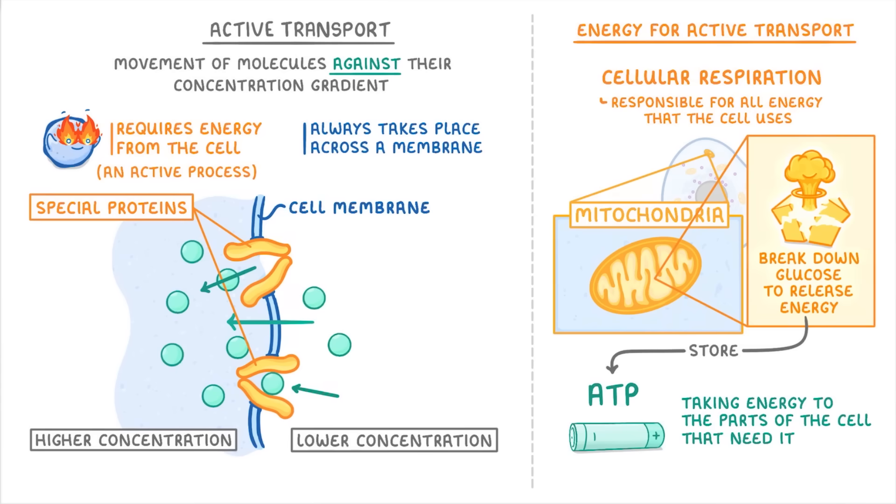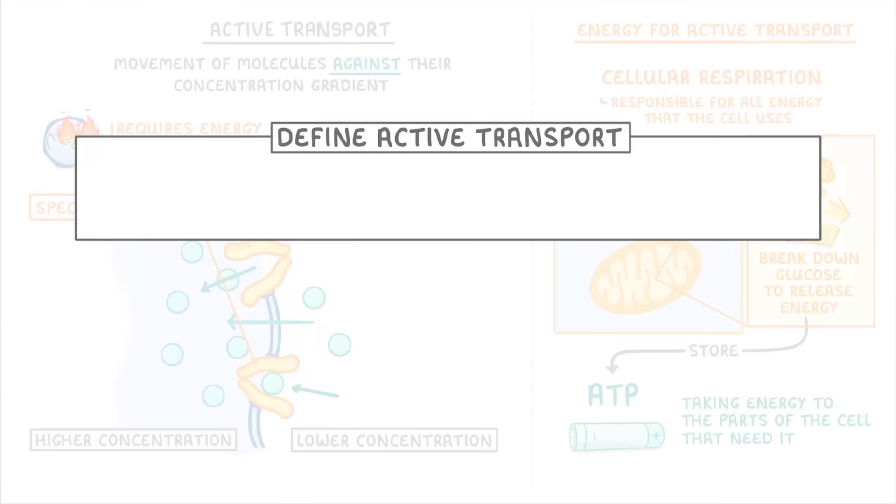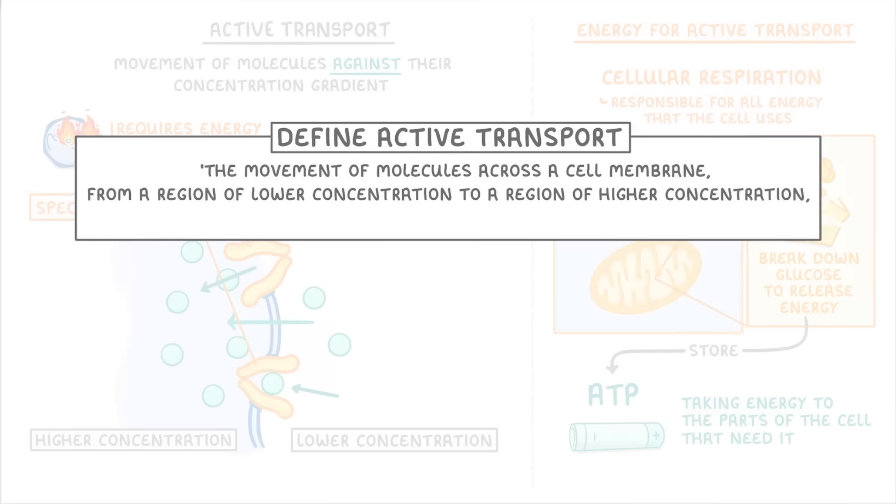So, if we put everything that we've covered together, we can define active transport as the movement of molecules across a cell membrane from a region of lower concentration to a region of higher concentration, and requiring energy from cellular respiration.